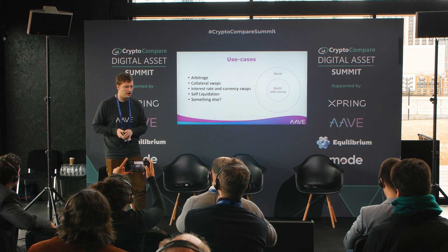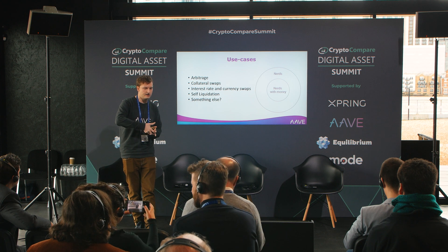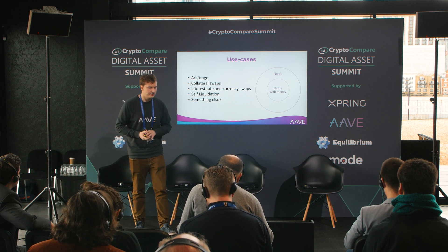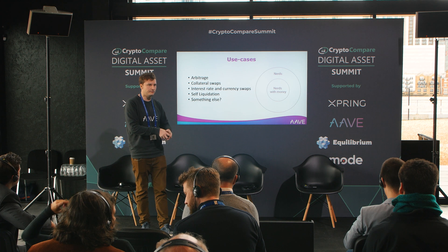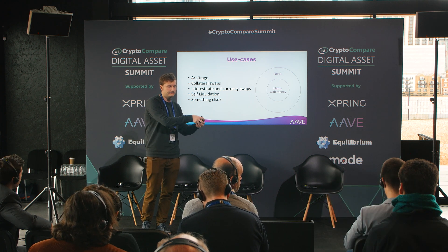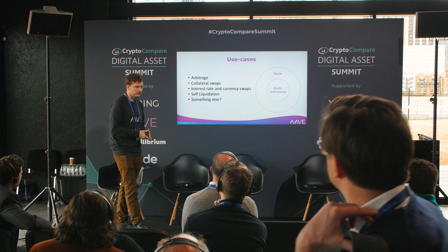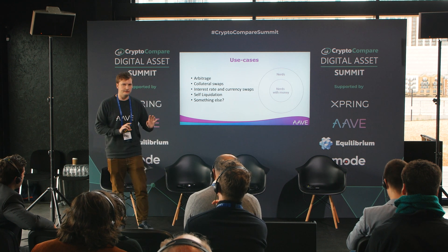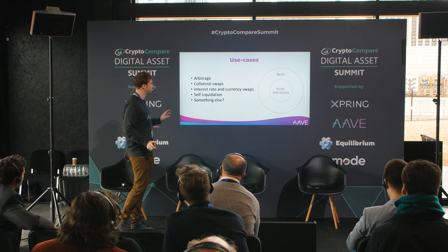There are different things you can do with flash loans. Since you borrow and return within one block, everything executable in a single Ethereum block can be done. One example is arbitrage: you borrow a flash loan in USDT or DAI, buy an asset on one decentralized exchange, sell it on another to capture the arbitrage profit, and return the loan. Other use cases include collateral swaps, interest rate swaps, currency swaps, and self-liquidation.